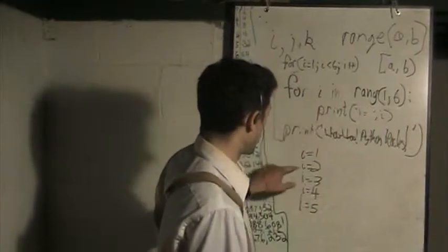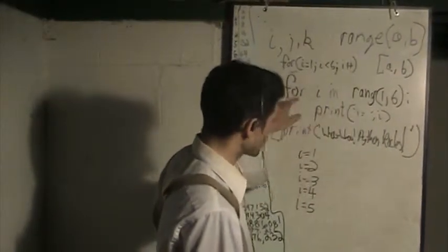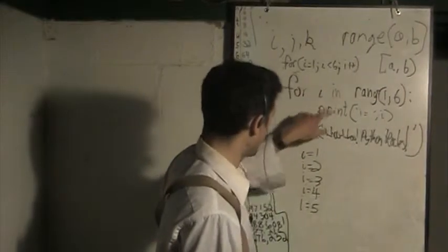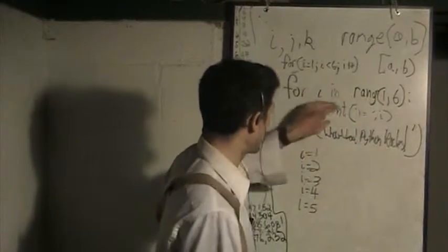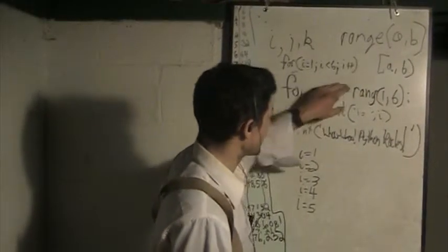i equals 2, print 2. And the third iteration, okay, print i, and then is 4 in range of that? Yes. And then 5, and then i is 6.